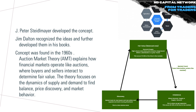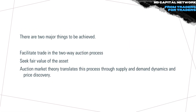There are two major things that AMT aims to achieve: first, to find the fair value; and second, to facilitate trading through a two-way auction process. Auction market theory translates this through supply and demand dynamics and price discovery.